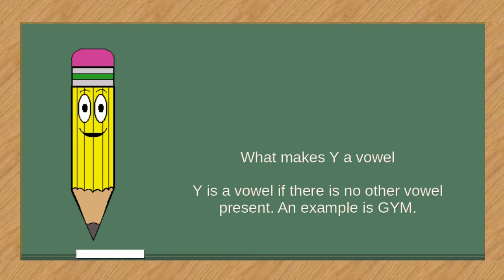What makes Y a vowel? Y is a vowel if there is no other vowel present. An example is gym.